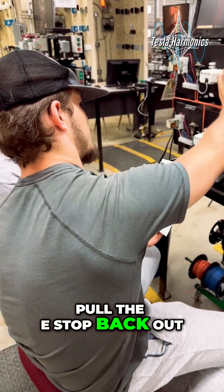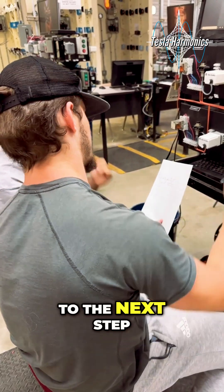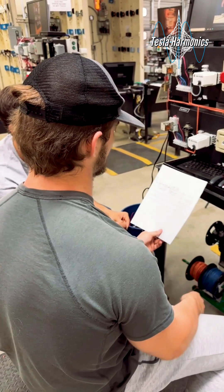Pull the e-stop back out. Make sure they're all activated on point. Then it'll carry on to the next step. Then it'll repeat.